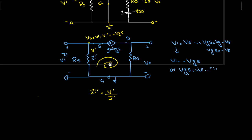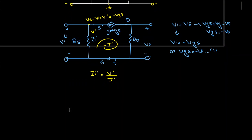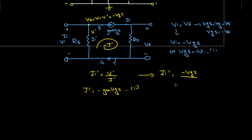To find the input impedance, I assume a current i' flowing here, with a voltage v' and impedance z', where z' equals v' divided by i'. This v' is actually my vs, or vi, which equals minus vgs. With i' flowing in one direction and gm*vgs flowing in the other direction, i' equals minus gm*vgs. This is equation two.